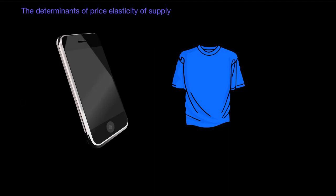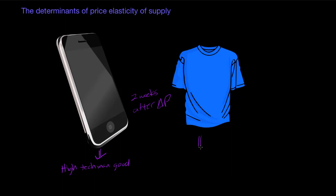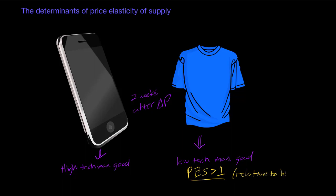Here we have two goods that are obviously manufactured goods: a smartphone on the left and a t-shirt on the right. Which of these two goods do you think producers will be more responsive to a price change within two weeks? Smartphones are a high-tech manufactured good, whereas t-shirts are a relatively low-tech manufactured good. T-shirts and low-tech goods are going to have a more elastic response to price changes.